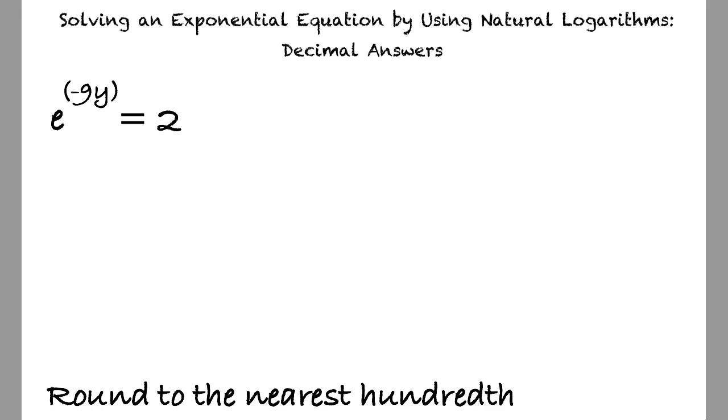Since the variable is in the exponent, we must start by taking a logarithm of both sides of the equation. Since our base is e, we can use the ln, or natural logarithm, found on the Alex graphing calculator, to simplify this equation.